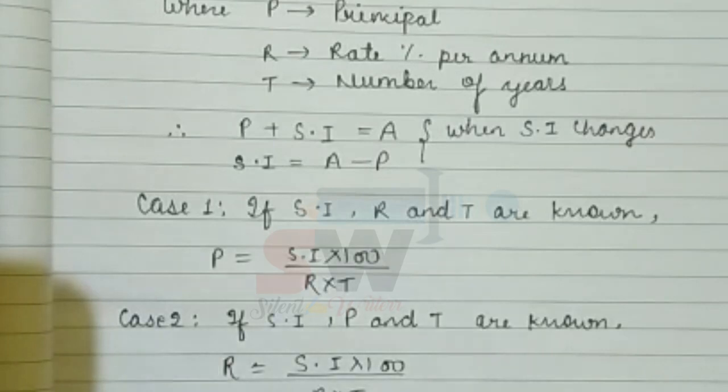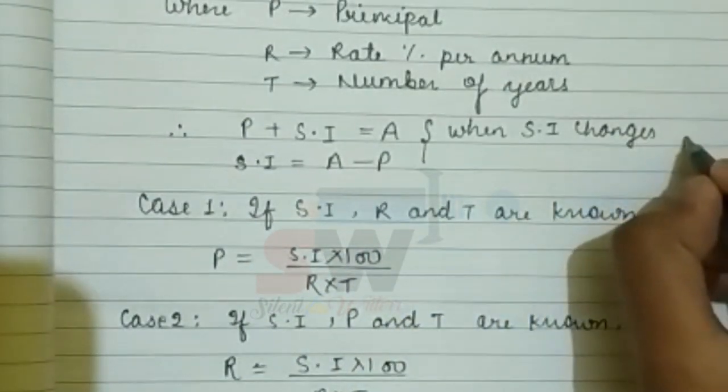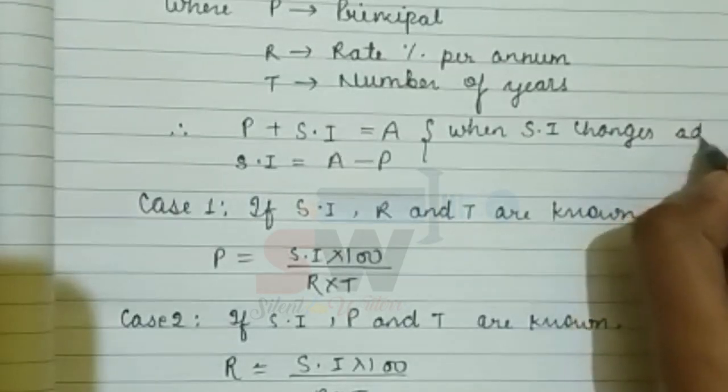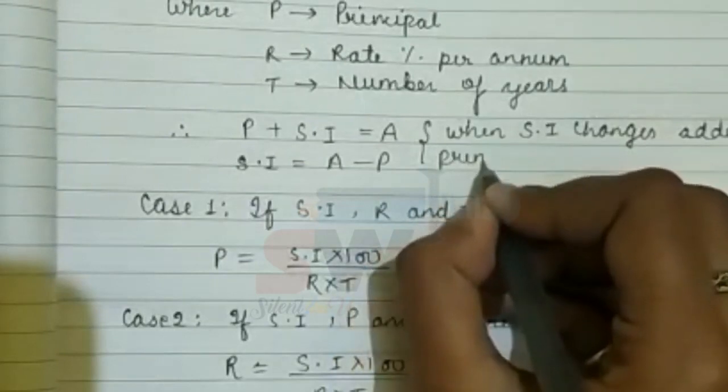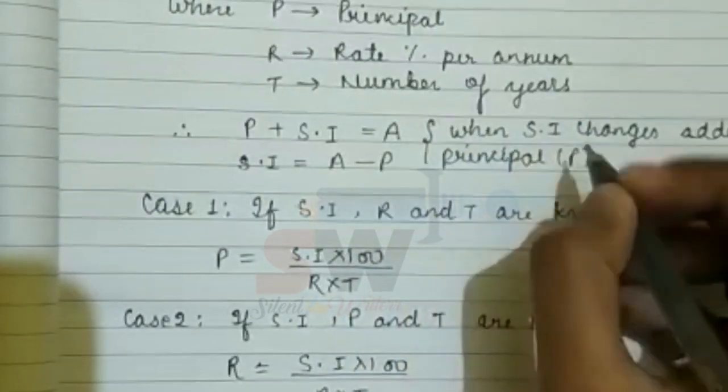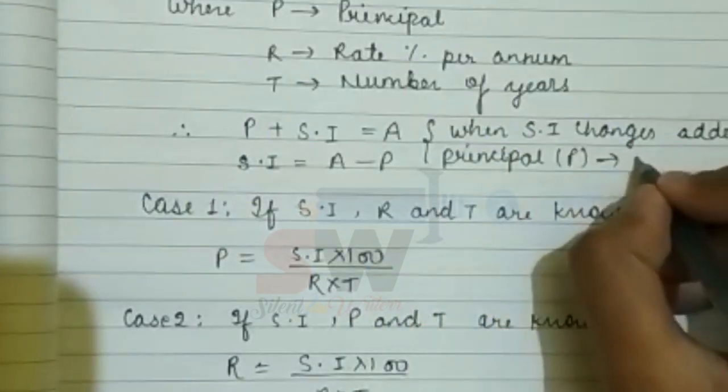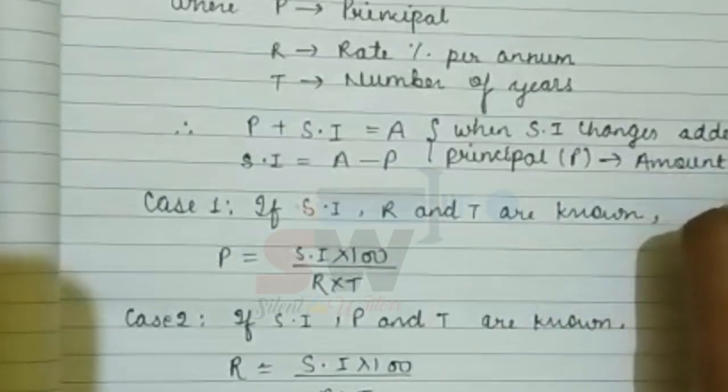So here, when SI is added to principal (that is P), it becomes amount (that is A).